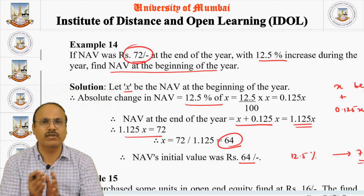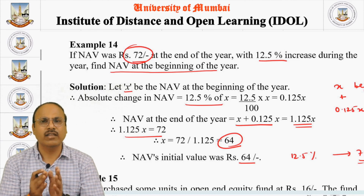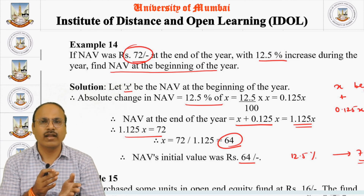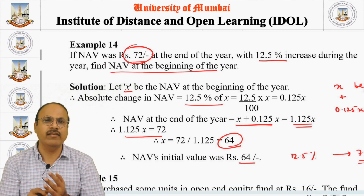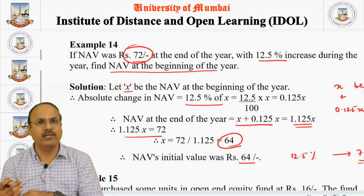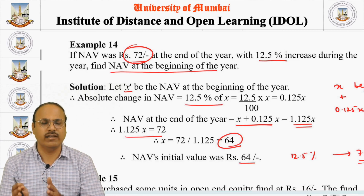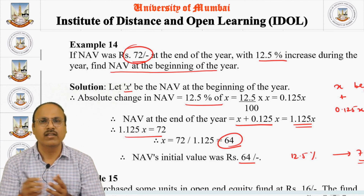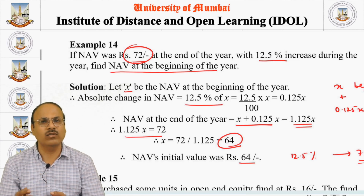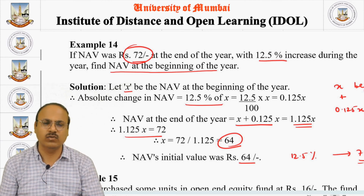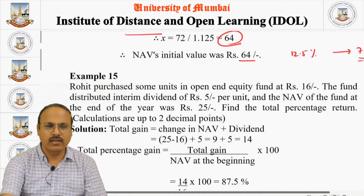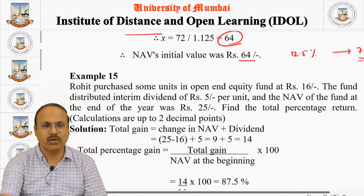This is a problem where two of the three values — beginning NAV, end-of-period NAV, and percentage increase or decrease — are known, and we solve for the unknown one. Let us do another problem.